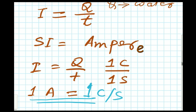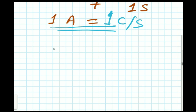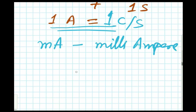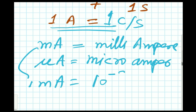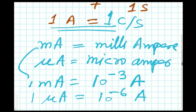Sometimes we also hear about smaller units of ampere, like milliampere and microampere. One milliampere equals 10 to the power minus 3 ampere, and one microampere equals 10 to the power minus 6 ampere. Many students are already acquainted with these.